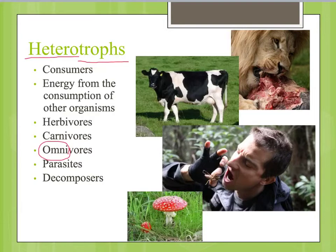Another form of heterotroph is parasites. A good parasite does not kill the thing which it feeds from. So as Bear Grylls is eating that large grasshopper, he's going to kill it. But if Bear Grylls caught a tapeworm from that grasshopper, the tapeworm does not want to kill Bear Grylls, because if it does kill him, it dies as well. So a successful parasite does not kill its host.